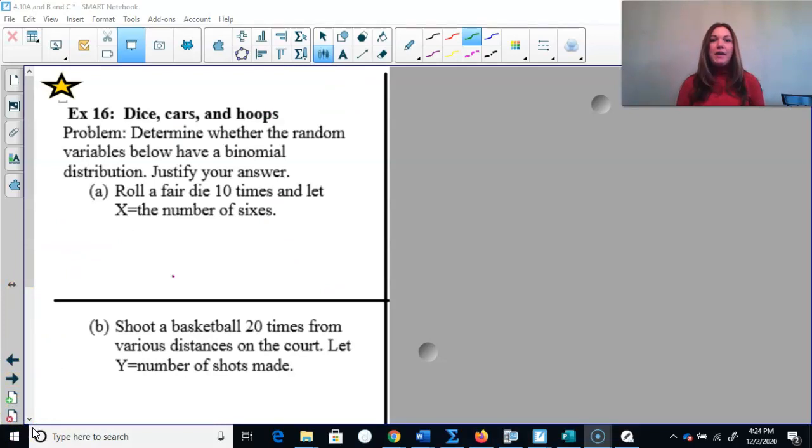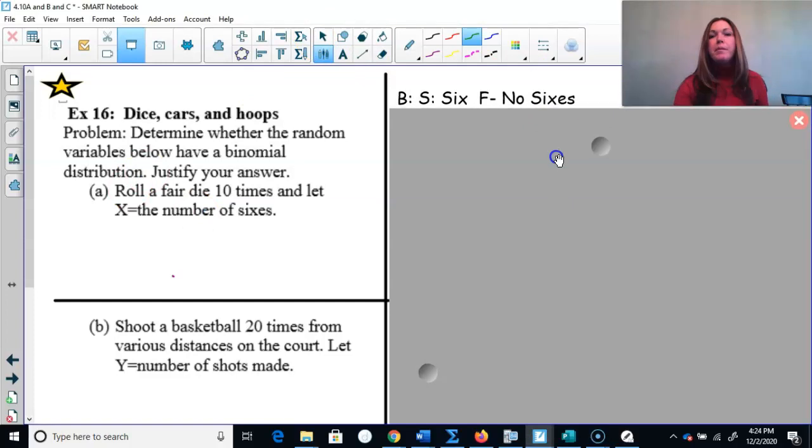The first setting that we have here is roll a fair die 10 times and let X equal the number of sixes. So we're going to record if it's a six or not each time for 10 times. B - success or failure. Our success is it would be a six. Our failure would be it would not be a six - it'd be a one, two, three, four, or five. That's okay, right? We're rolling a fair die 10 times. P.S. We have the game Tenzi, you guys. Anyone's played Tenzi? My son found one number cube, one die that there was two twos on it. Something fishy there.